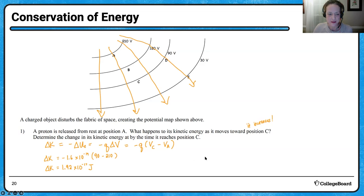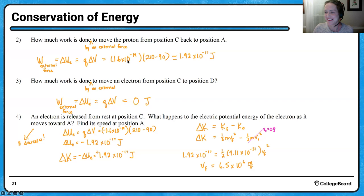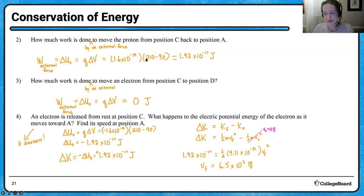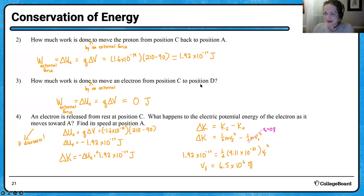Here are some more examples. When you're asked how much work is done, you have to say 'by what.' I show how much work is done by an external force here. The field is not going to bring the proton from C, a lower potential, back to A — that is going to cause an increased potential energy. Now if we try to move another charge from C to D, looking at the diagram, C and D are at the same potential. So the field and an external force are not going to do any work because there's no change in potential.